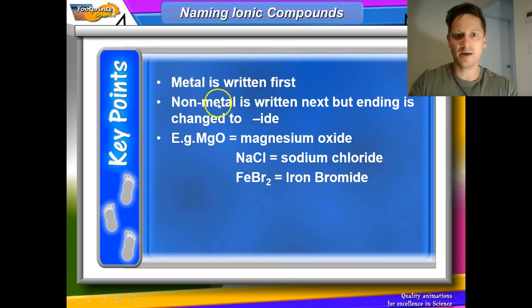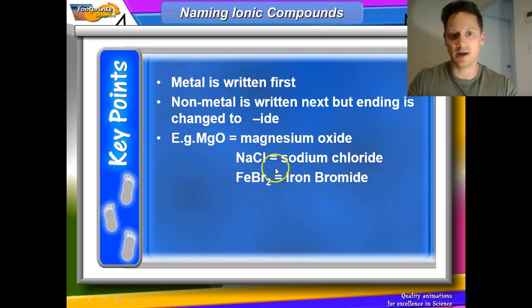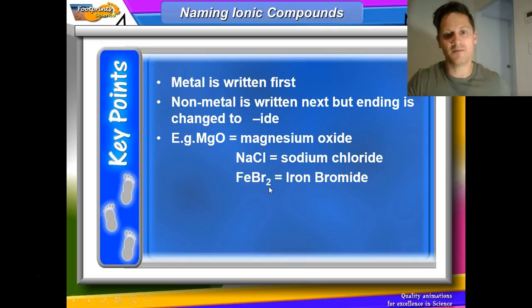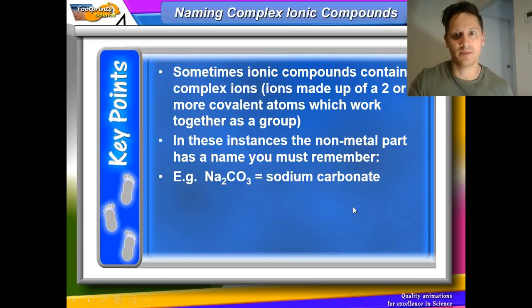In order to name ionic compounds, the metal is written first. That's just the nomenclature. The non-metal is written second, and the ending is changed to -ide. So magnesium and oxygen connected together is referred to as magnesium oxide. Sodium and chlorine is referred to as sodium chloride. Iron and bromine is referred to as iron bromide. Now just note that the numbers, the subscript numbers in the molecular formula don't affect the name. So you don't need to worry about the numbers there at all. You just name the elements.